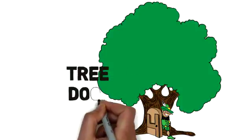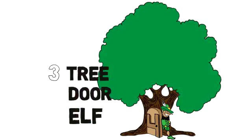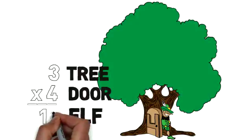So the picture of the tree, the door, and the elf reminds you that three times four equals twelve. We also have a story that goes along with the picture to help you anchor the memory.